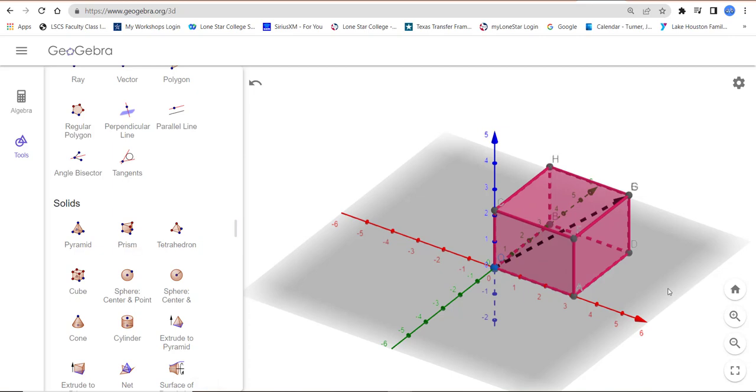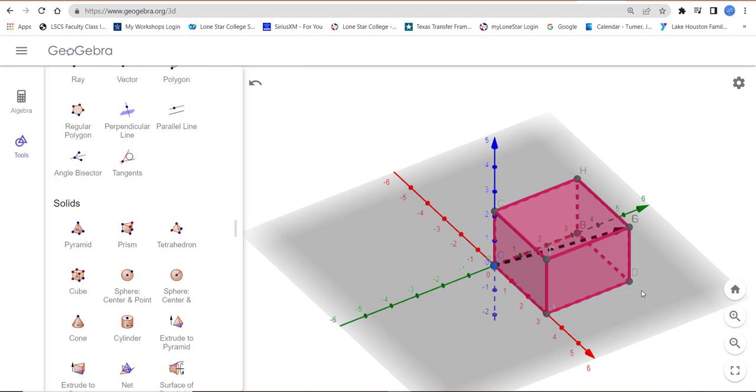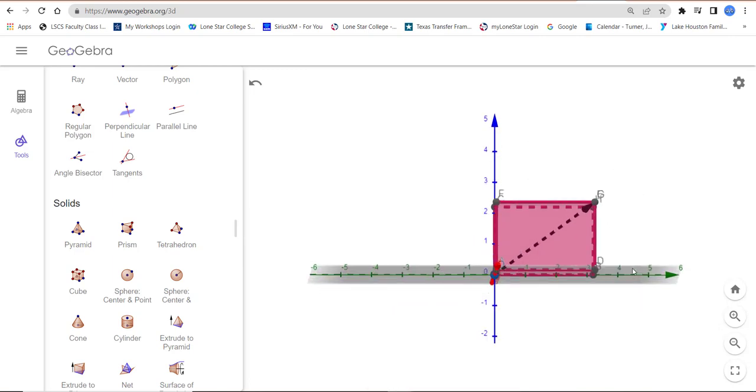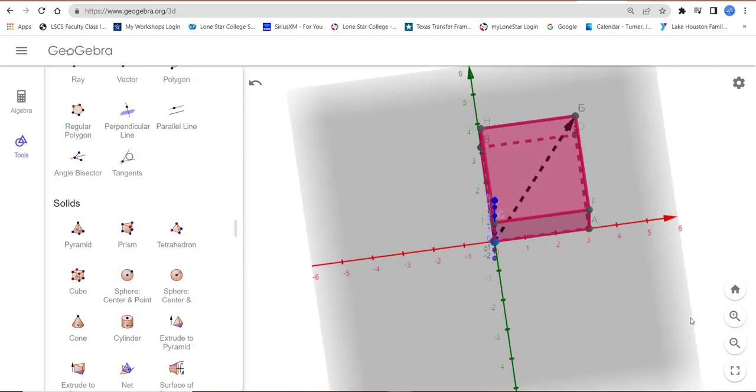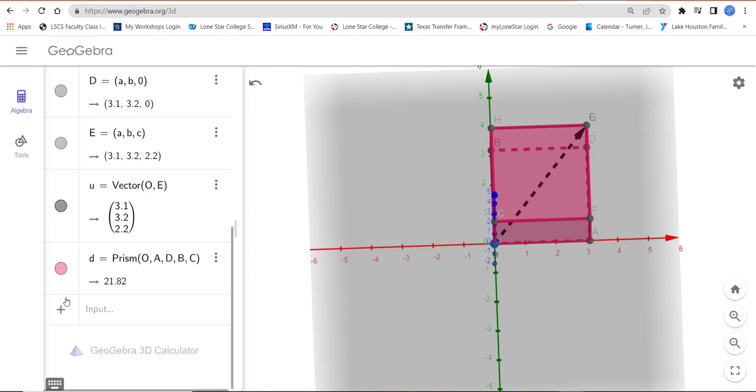Okay, so now what we have is our vector is inside of this cube, and we can look at this thing straight on, straight from the top, straight from the bottom. You can turn that cube visibility on and off by just clicking on it.